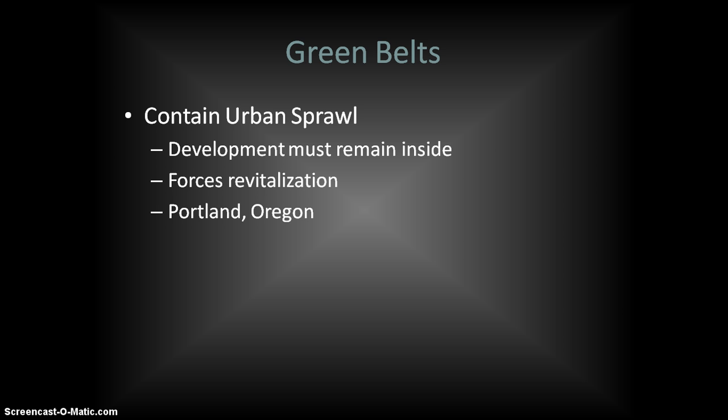Anything outside the greenbelt must be zoned agricultural, so development there will be much less. The benefits are that you contain sprawl, keep low-density development from taking place, contain issues with transportation and resource consumption. It also reinforces revitalization of downtown areas — instead of going outside the city, people might choose to revitalize a run-down area. This could also contribute to the process of gentrification we discussed in previous videos.